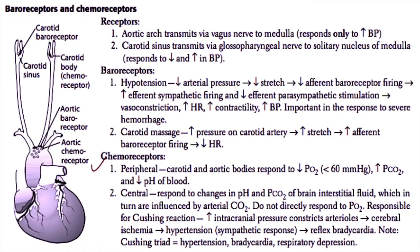Chemoreceptors, both peripheral and central, are located in the vascular system as well. The peripheral chemoreceptors are located in the carotid and aortic bodies, and these respond to decreases in the partial pressure of oxygen. A decrease in the partial pressure of oxygen to less than 60 mmHg, an increase in the partial pressure of carbon dioxide, or a decrease in blood pH leads to stimulation of these peripheral chemoreceptors.